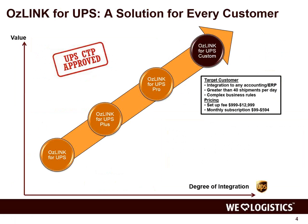In terms of OzLink solutions, there's a family called OzLink for UPS with four different offerings. On the bottom left is simply OzLink for UPS — a rating tool typically used in the front office. It allows customers, maybe a telesales person on the phone, to quickly quote the cost of a shipment to their customer. It includes negotiated rate or list rate, freight services, and it's a free solution that customers can activate right from the OzDevelopment site.